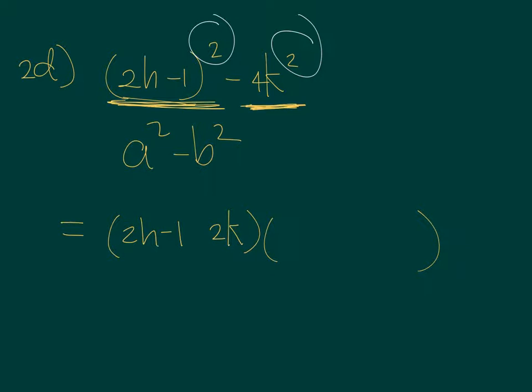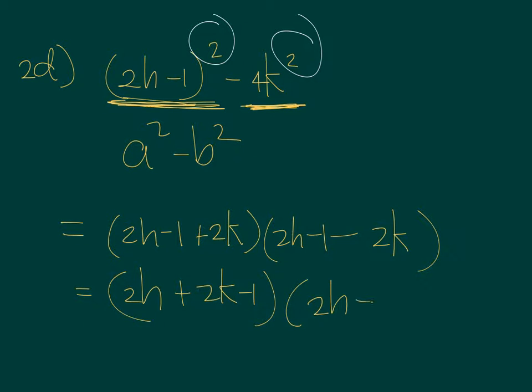So you have 2H minus 1 and 2K. So one will take plus, and the other will take a minus sign. And then simplifying this, you have 2H plus 2K minus 1, so just arrange the terms. And then on the second, you have 2H minus 2K and then minus 1. So this is the factored form.